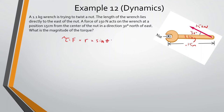This makes sense because the more force you apply anywhere along the wrench, the more it's going to twist. Also, the further out you are, the easier it is to twist. And the angle shows that the more perpendicular the force is, the more efficient it will be — if it's less angled, it will have a harder time twisting.